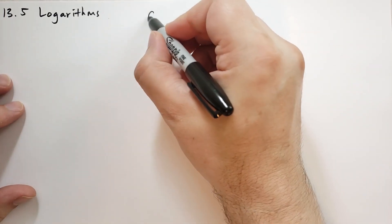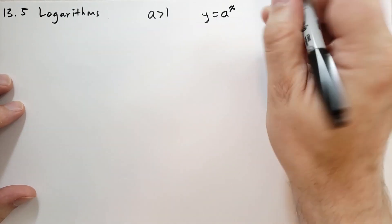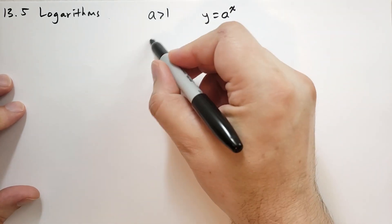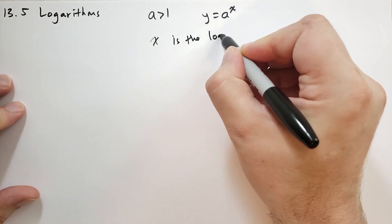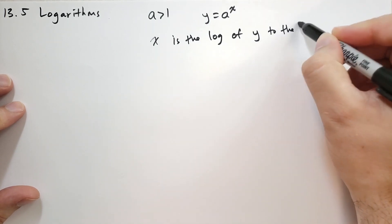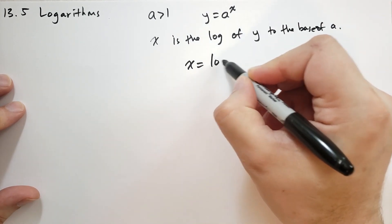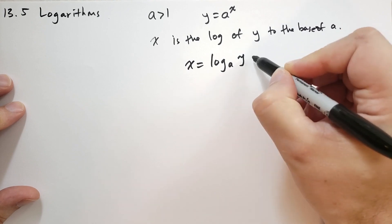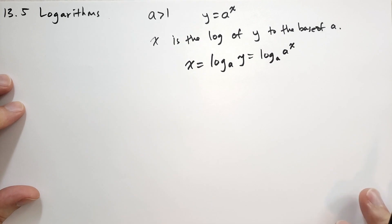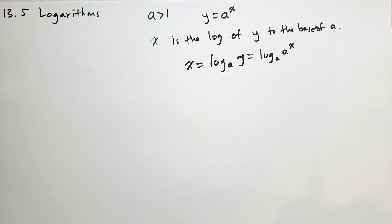Let's suppose that we had a number a that's greater than 1, and we said y is defined to be a to the x. So we have the exponent function there. So x is the logarithm of y to the base of a. And we write x is equal to log base a of y, which in this case is log base a of a to the x. So this is the way we use logarithms to get to that exponent part.